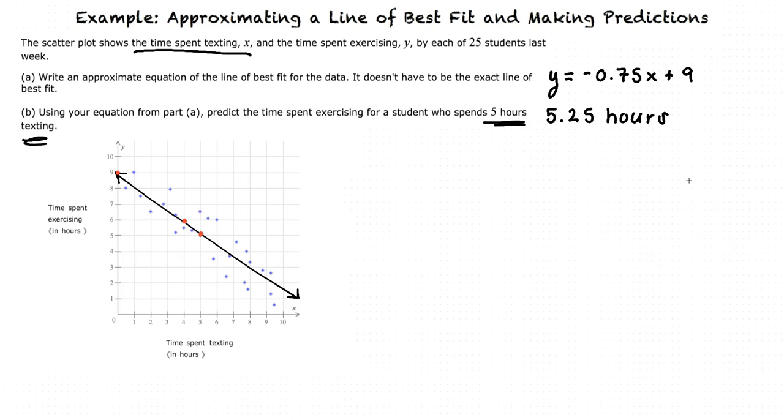So our final answer for both parts is y equals negative 0.75x plus 9 for our equation for the line of best fit, and 5.25 hours spent exercising.